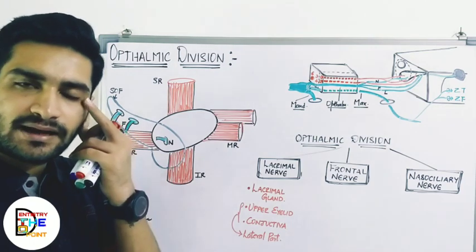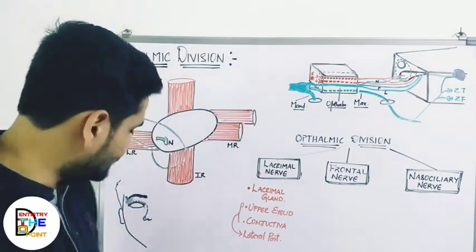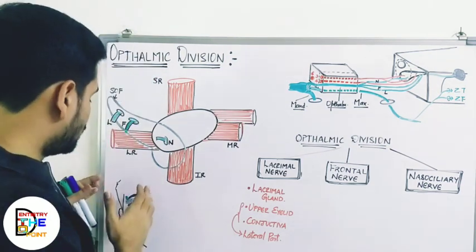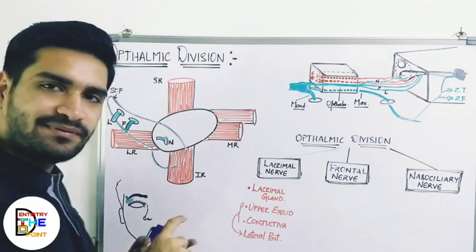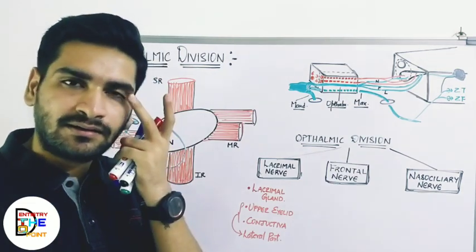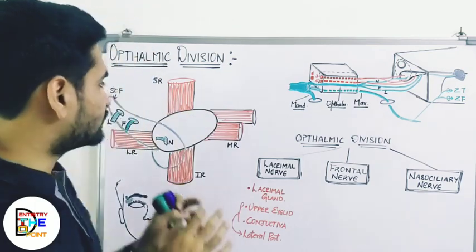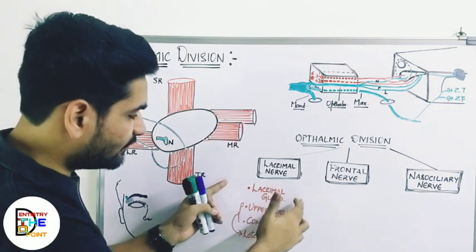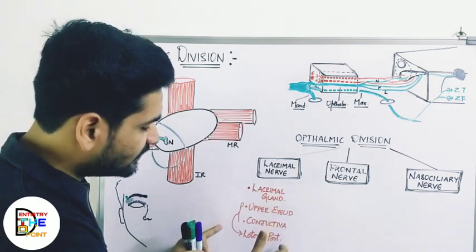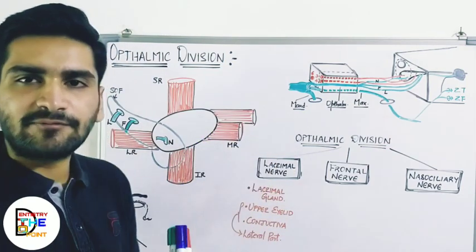So the lacrimal nerve is going to supply: the lacrimal gland, the skin of the lateral part of the upper eyelid, and its conjunctiva. To summarize: lacrimal gland, upper eyelid, and conjunctiva — specifically the lateral part of the upper eyelid and its conjunctiva. This is about the lacrimal nerve.